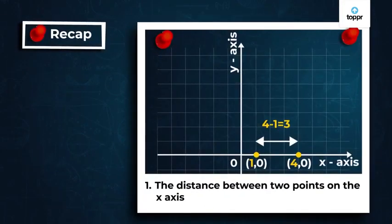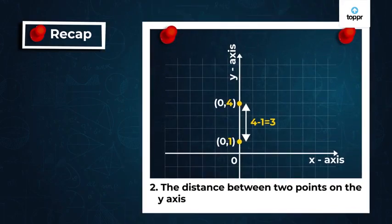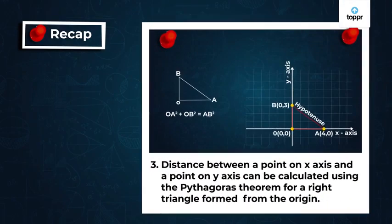Okay, now let us quickly summarize what we've learned in this session. The distance between two points on the x axis is the difference of their x coordinates. The distance between two points on the y axis is the difference of their y coordinates. The distance between two points with one on the x axis and the other on the y axis can be calculated using the Pythagoras theorem for a right angle triangle formed from the origin.